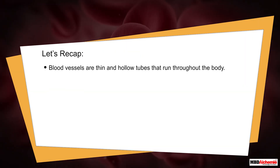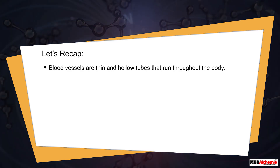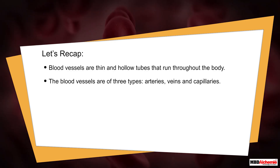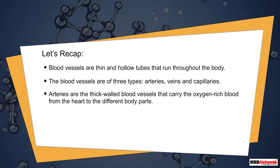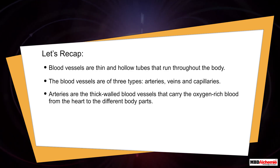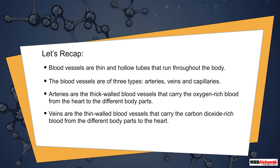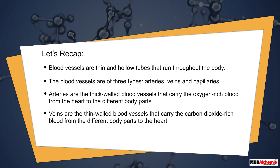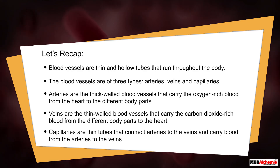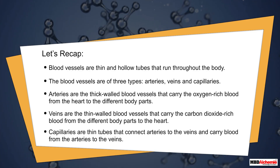Let's recap. Blood vessels are thin and hollow tubes that run throughout the body, and they are of three types: arteries, veins, and capillaries. Arteries are thick-walled blood vessels that carry oxygen-rich blood from the heart to the different body parts. Veins are thin-walled blood vessels that carry carbon dioxide-rich blood from the different body parts to the heart. Capillaries are thin tubes that connect arteries to veins and carry blood from the arteries to the veins.